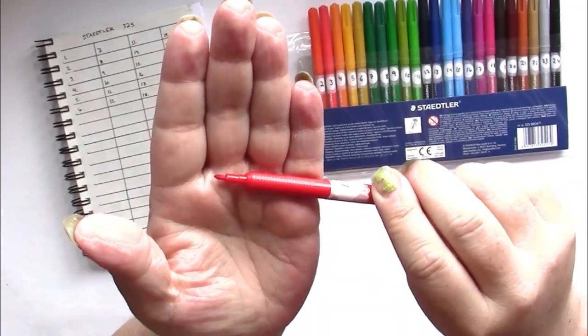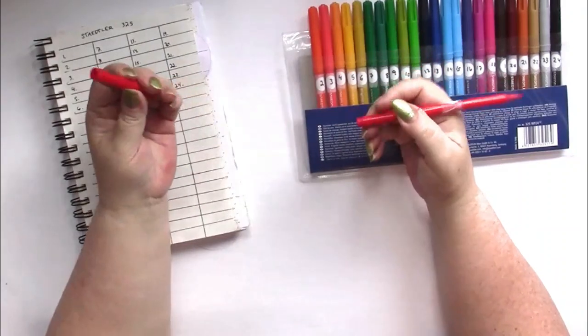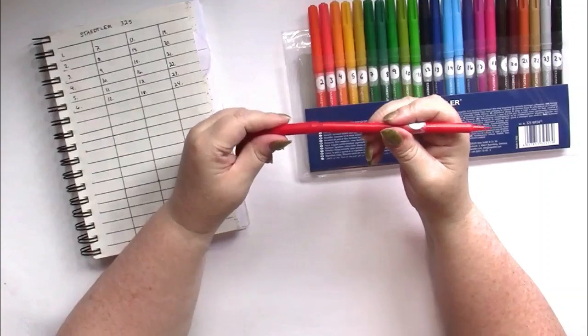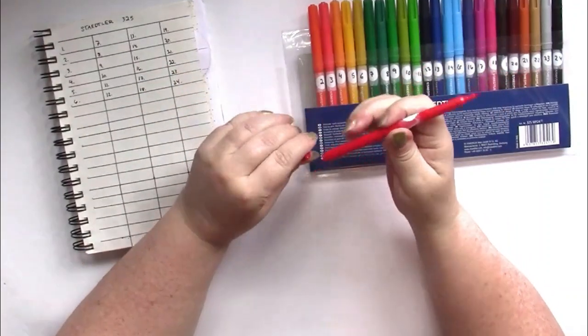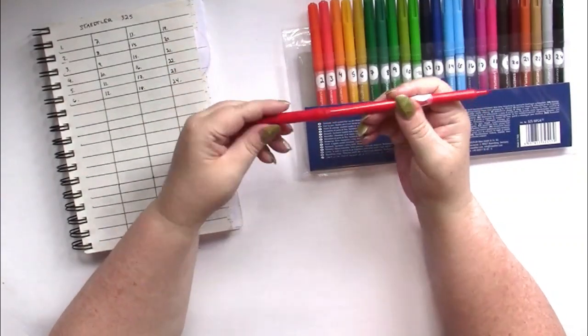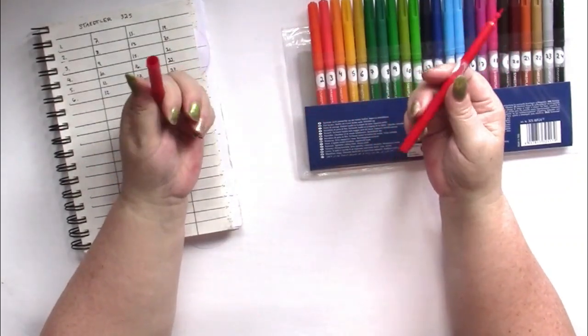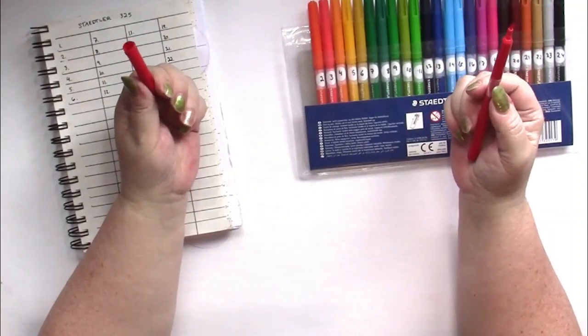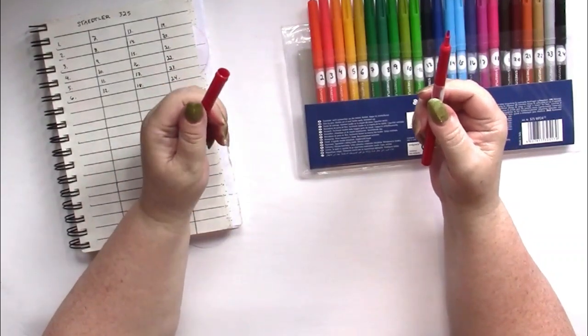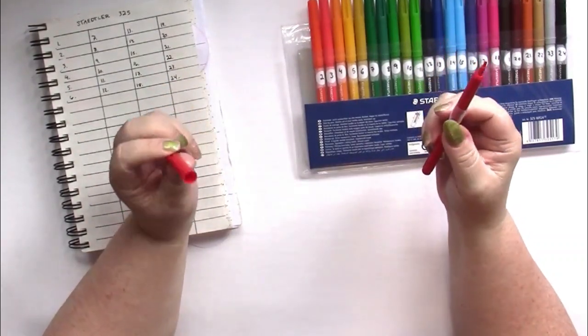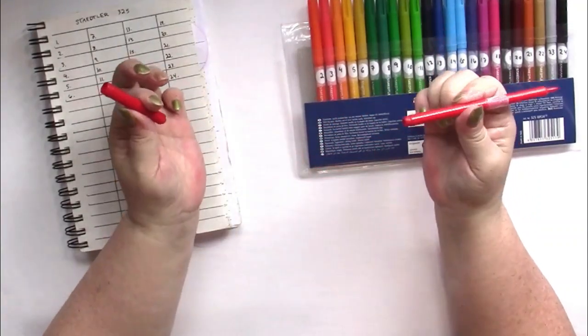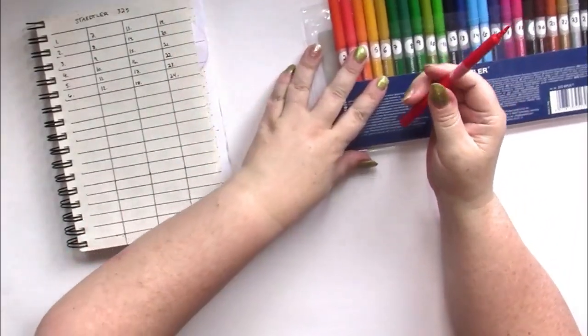So there we go and the caps come off easy and there you can see the tip. It's just a little tip and the cap does not post and that really bothers me. Children's markers should post or else you're going to lose the lids and they're going to dry out. And I don't know about your kids but mine would have lost them. Heck I lose them. So yeah no posting. So that I don't like.